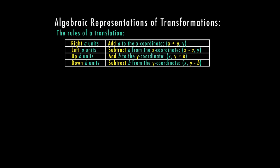For the rules of translation, this is where we slide. We have right, left, up, or down as the directions we can go. If I'm moving right a units — using a in place of a number because that could change — then I'm going to add a to the x coordinate. So right means x plus a, comma y. Left a units means I subtract a from the x coordinate, giving x minus a, comma y.